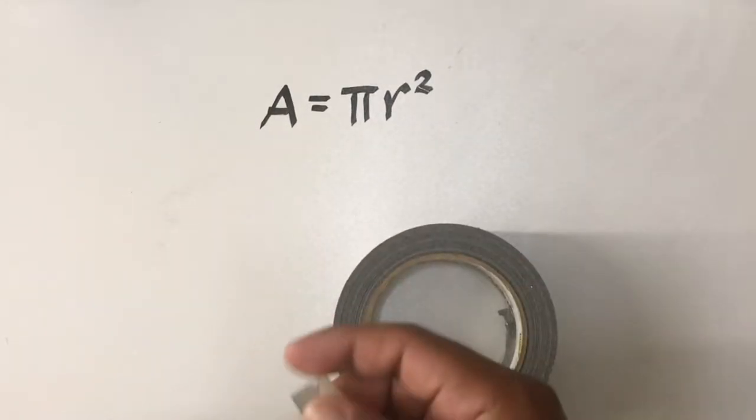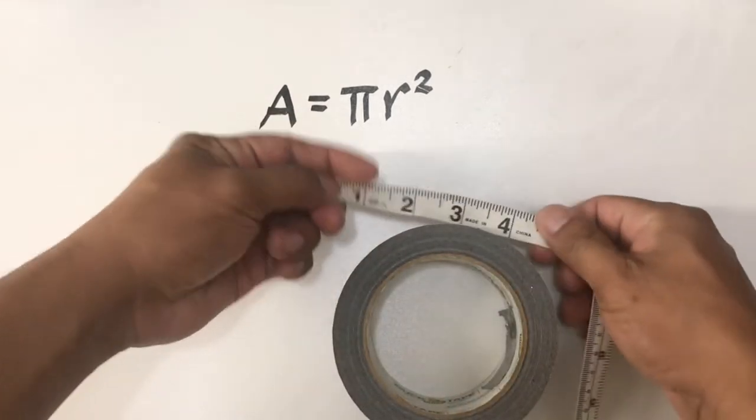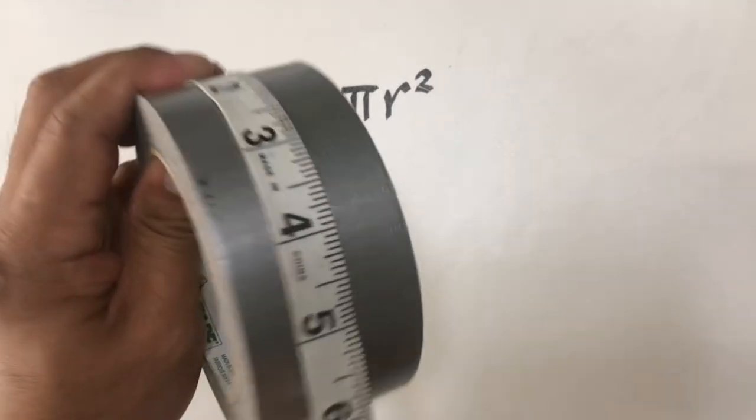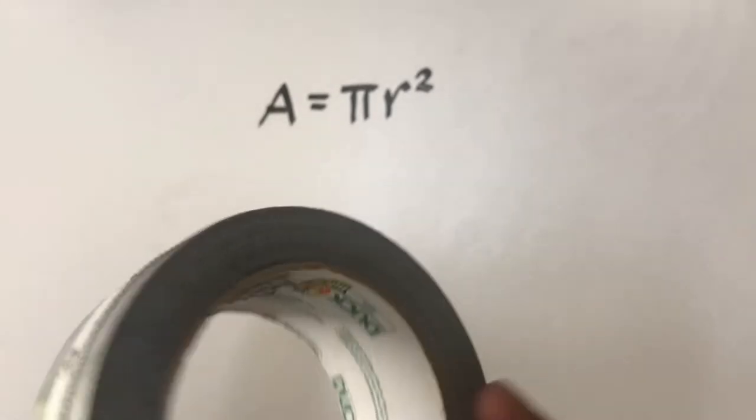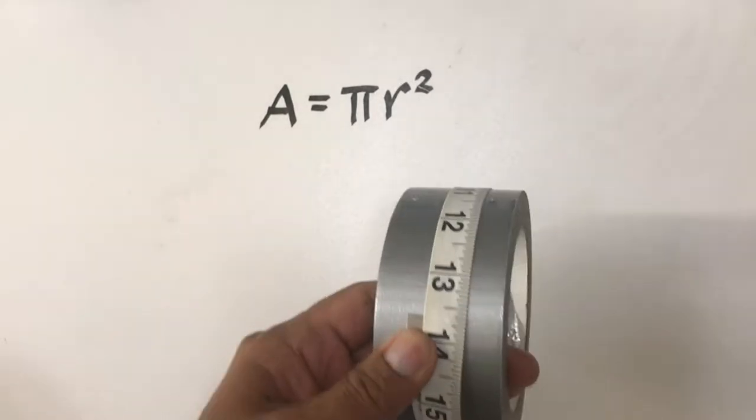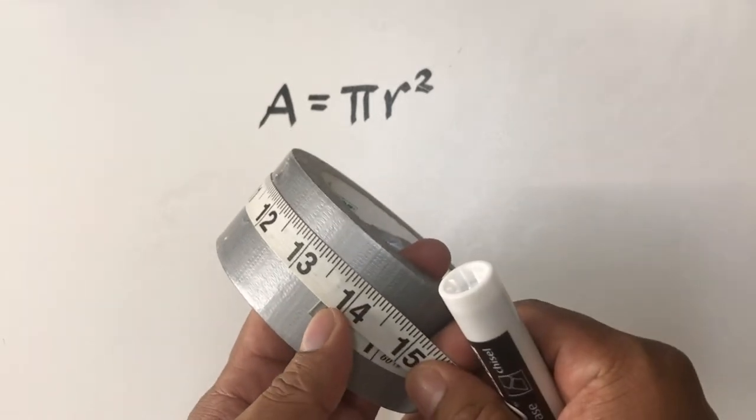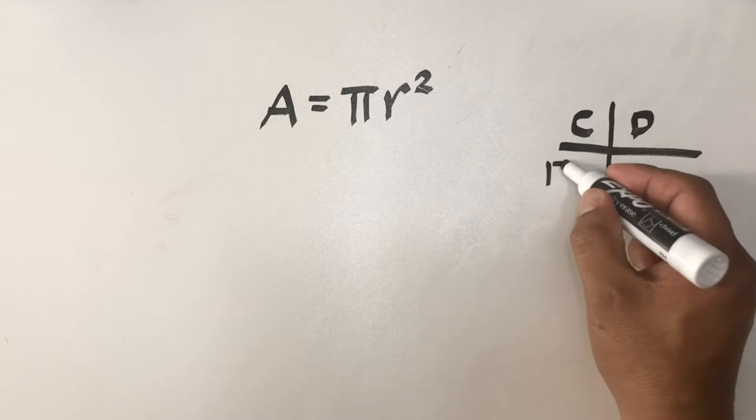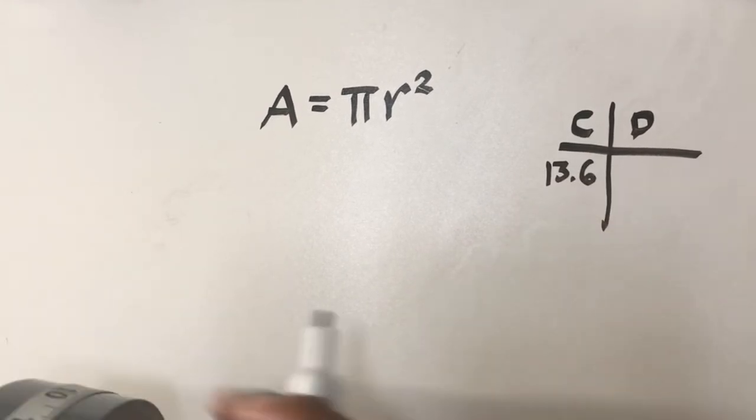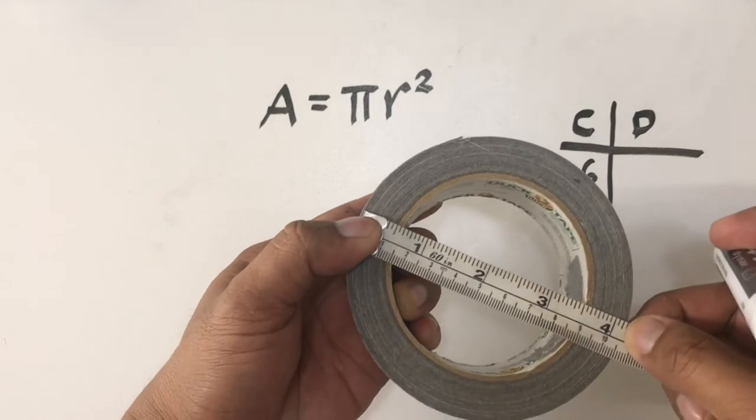So for this circle, let's measure its circumference. I measure the distance around the circle and we get a value of about 13.6. For the diameter, we got 4.3.